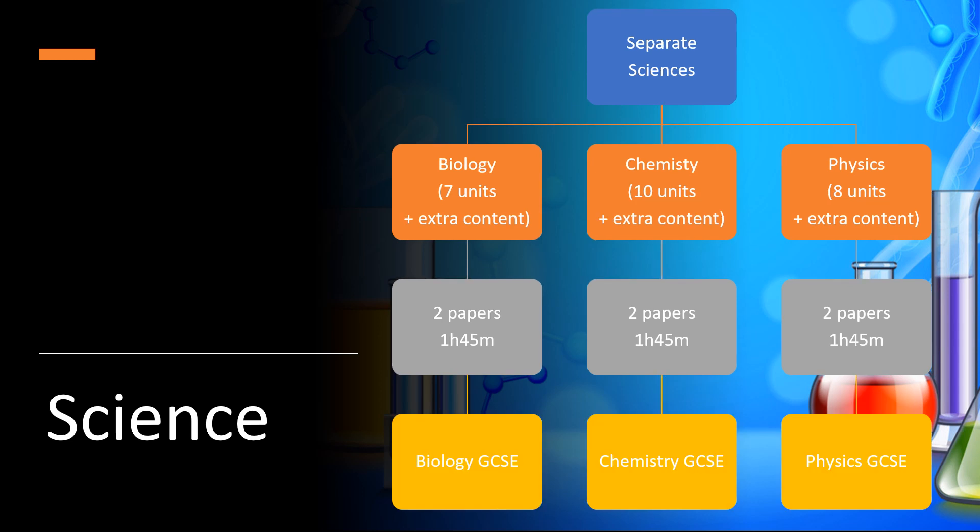Because they have the additional content and the additional assessment, they will get three GCSEs from Separate Sciences. So instead of getting two combined GCSEs in science, they will get one GCSE in biology, one in chemistry and one in physics, so a total of three science GCSEs.